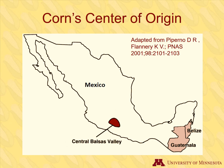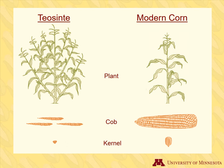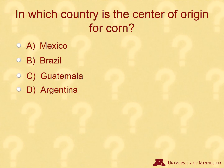Teosinte species are thought to be the wild ancestors of our modern-day corn. The wild ancestors of corn looked much different from our modern corn. Teosinte has more branching than modern corn, multiple small cobs per plant as well as multiple tassels. The seed is triangular in shape and has a hard seed coat. It took researchers a long time before they came to the conclusion that Teosinte was the likely ancestor of our modern corn because of its appearance.